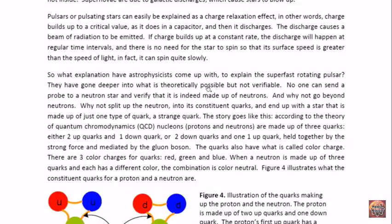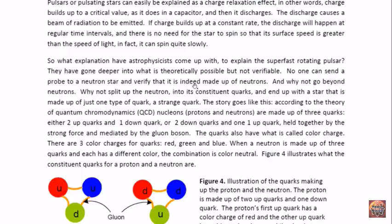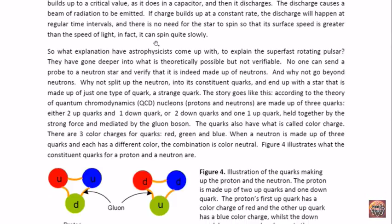So what explanation have astrophysicists come up with to explain the super-fast rotating pulsar? Well, they have gone deeper in what is theoretically possible, but not verifiable. Neutron stars or even black holes are not verifiable. No one has sent a probe out to a neutron star to see whether it is really made up of neutrons. But this is the explanation that the astrophysicists have come up with. They just went beyond the neutron, which is supposedly, according to theory, made up of quarks. And so what we end up with is the breaking up of the neutron. So we end up with a star that is made up of quarks, the strange quark. And this is the way the theory goes. And this is according to quantum chromodynamics.